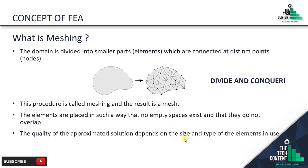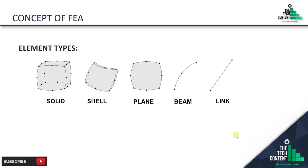By size of element: if you divide the domain into much smaller parts you get more accurate results, but it will also take more computation time. There are several element types: solid, shell, plane, beam, and link. We will do analysis using these elements in further sessions.